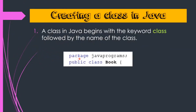First of all, in our coding we are having the package statement. In this statement, we are going to use the package keyword which will indicate that we are providing the name of the package. After it, the name of the package is to be written. After this package statement, we are having the public class statement where we use the keyword and also specify the name of the class.